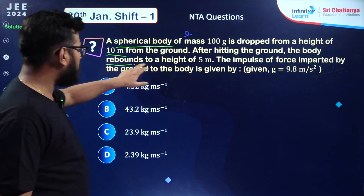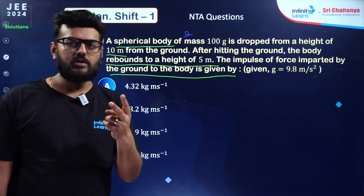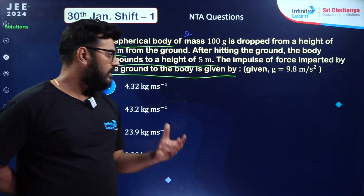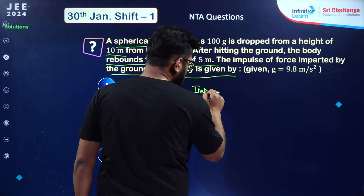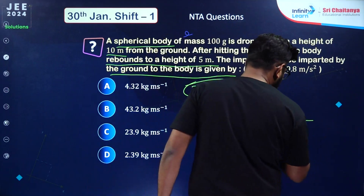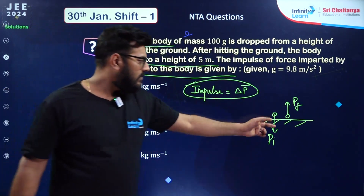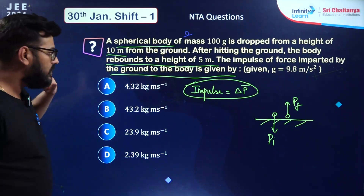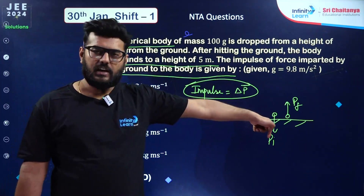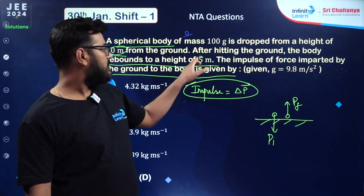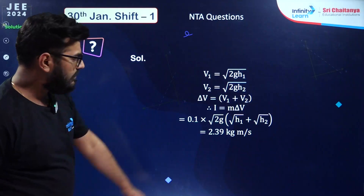Second question from Newton's laws of motion — a spherical body of mass 100 gram dropped from 10 meters, rebounds to 5 meters. The impulse of force imparted by the ground is asked. Impulse equals change in momentum. Before hitting: velocity from root(2gh) with h=10. After: velocity from root(2gh) with h=5. Calculate initial and final momentum, find the change. The correct answer is 2.39 kg·m/s, option T.